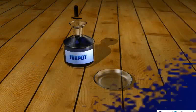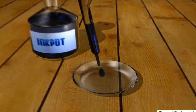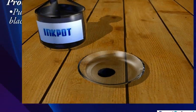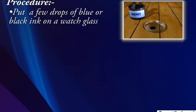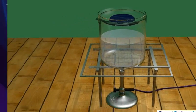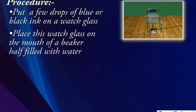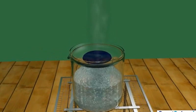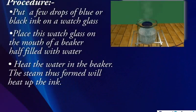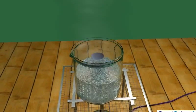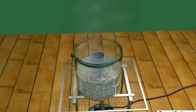First, put a few drops of blue or black colored ink on a watch glass. Now place this watch glass on the mouth of a beaker half filled with water, and then heat the water in the beaker. The steam thus formed will heat up the ink, and the water present in the ink evaporates. Ultimately, a blue or black residue is left on the watch glass.